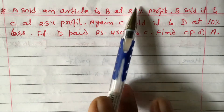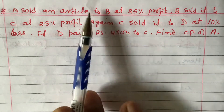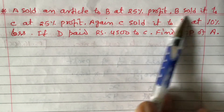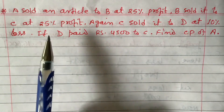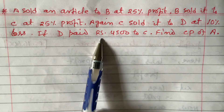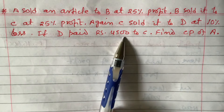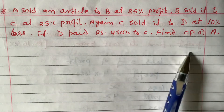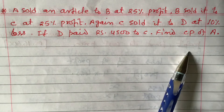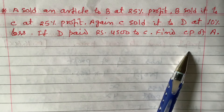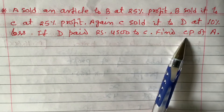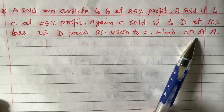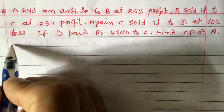Most questions of this type involve only two steps — A to B and B to C. But here, an extra step C to D is also given, making it three steps. If you learn to solve three steps, you can easily handle two-step questions as well.